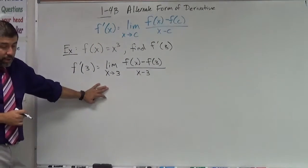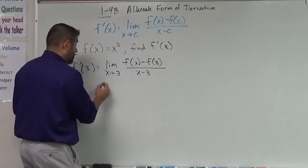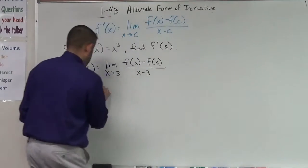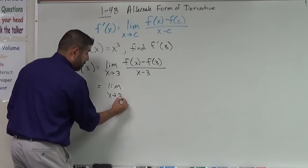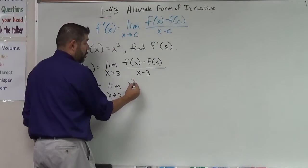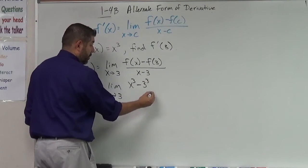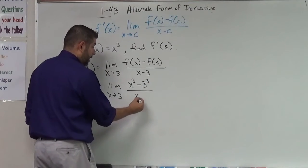Okay so then we're going to go ahead and plug that in and we're going to get, I'm going to write it here, the limit as x approaches 3 of x cubed minus 3 cubed, and I'm just going to write it as 3 cubed for a second here, over x minus 3.